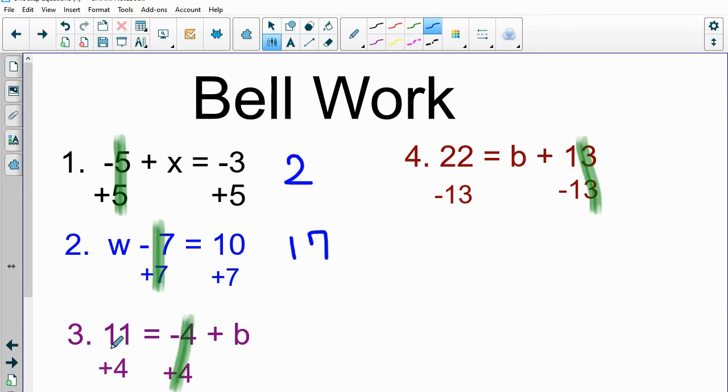On number three, 11 + 4 is 15, so in that case we would have b = 15. And it's okay if the variable is on the right side like that. On this last one, 22 - 13 is going to be 9, so b = 9 in that case.